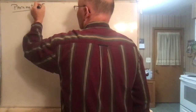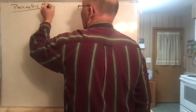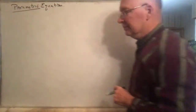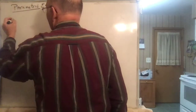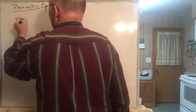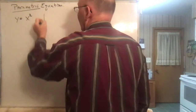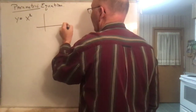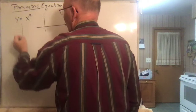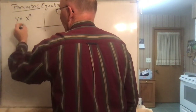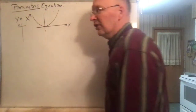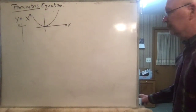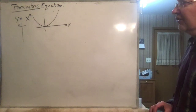A parametric equation, or a parametric function, is one which uses a parameter. What do I mean by that? If we have y equals x squared, for example, then the way we graph it is we have the x-axis, and for every x value, you determine what the y value is and graph it. I'll call that the standard way of doing it.